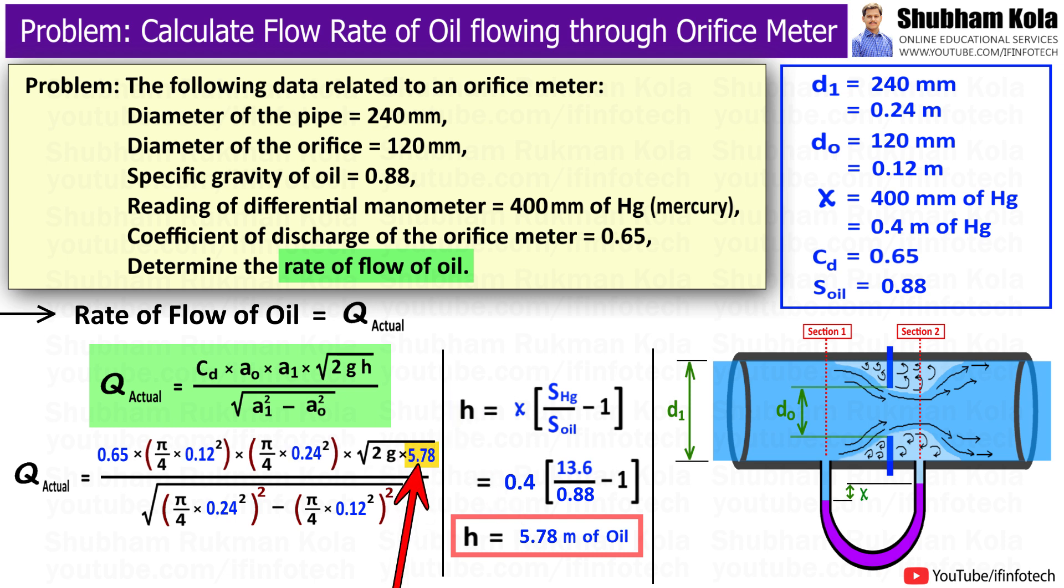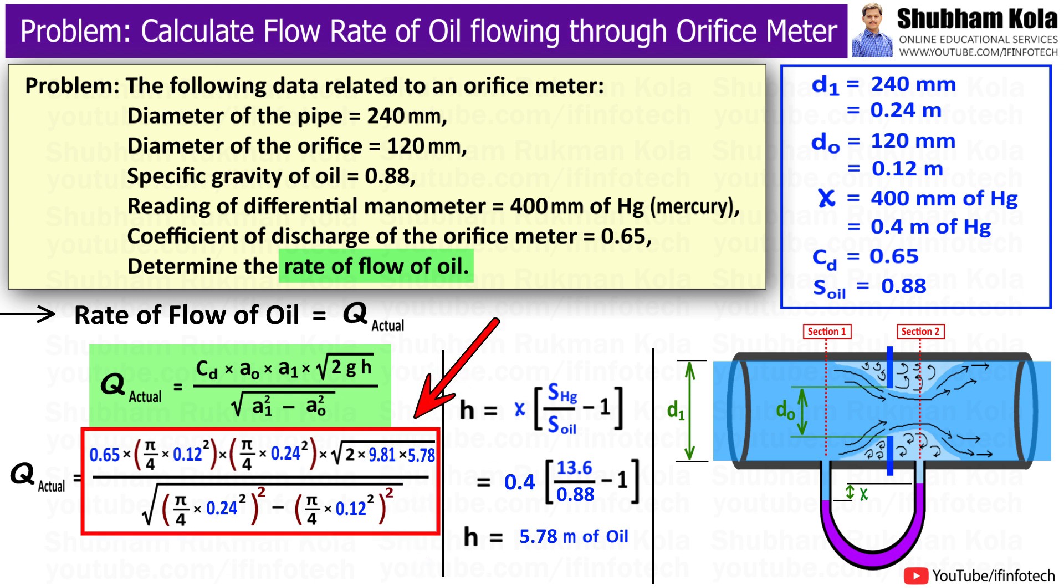I will put this value in the flow rate formula, and here g is acceleration due to gravity, i.e. 9.81. So now we have found all the values in the discharge formula in order to calculate discharge, i.e. the flow rate of oil. Therefore, by calculating this whole term, I will get the flow rate of oil as 0.08 cubic meters per second.